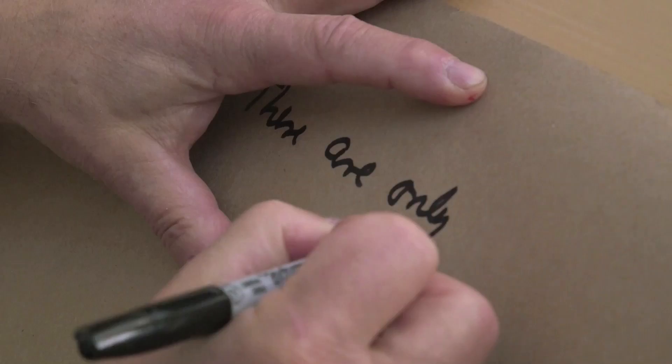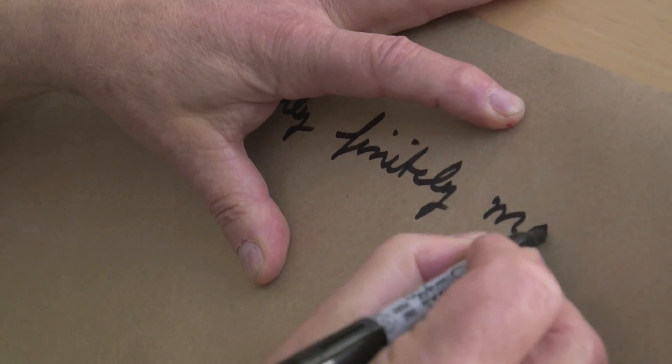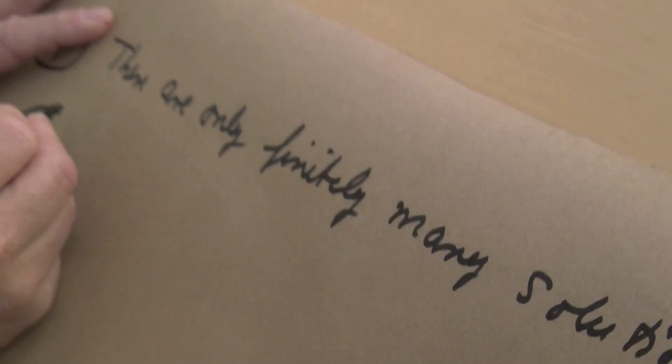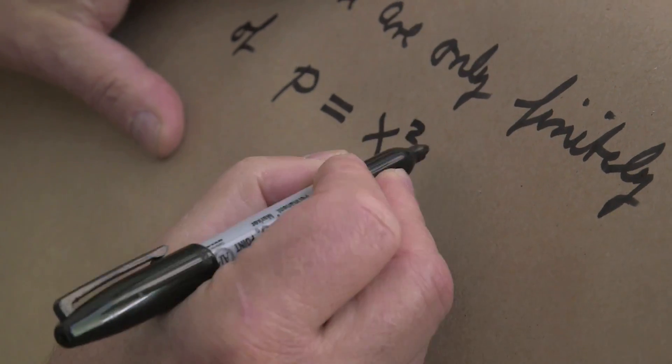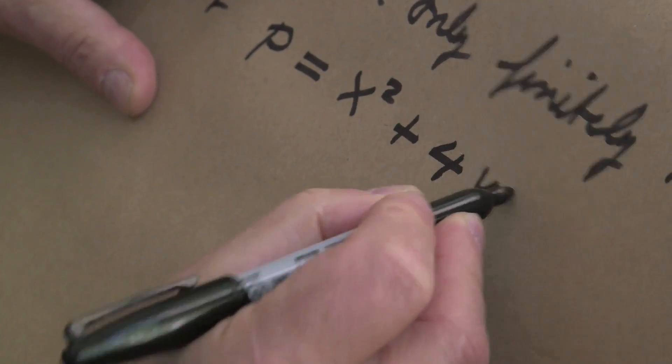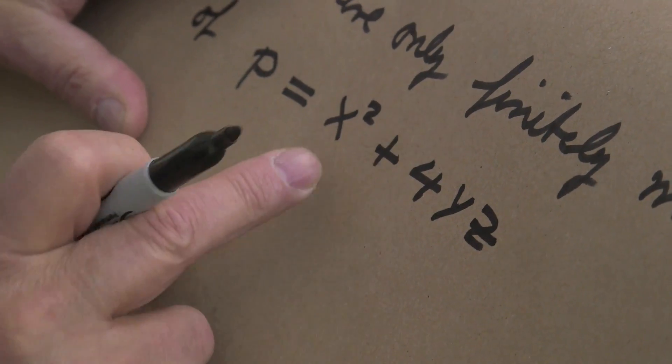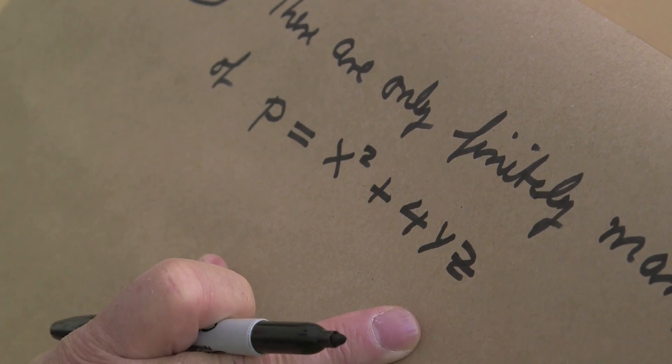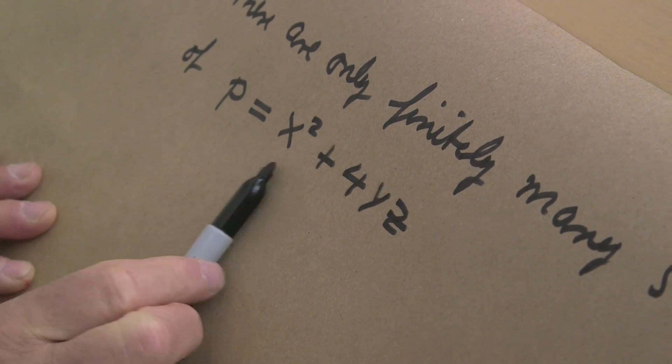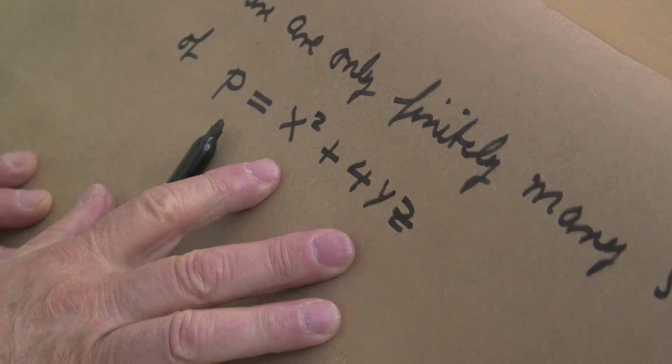There are only finitely many solutions of this equation p equal x squared plus 4yz with x, y, and z natural numbers, in particular positive numbers. Because if we would have infinitely many solutions, then these numbers would get arbitrarily large. And p is a fixed number, so we would get on the right side numbers which are larger than p. So only finitely many solutions.